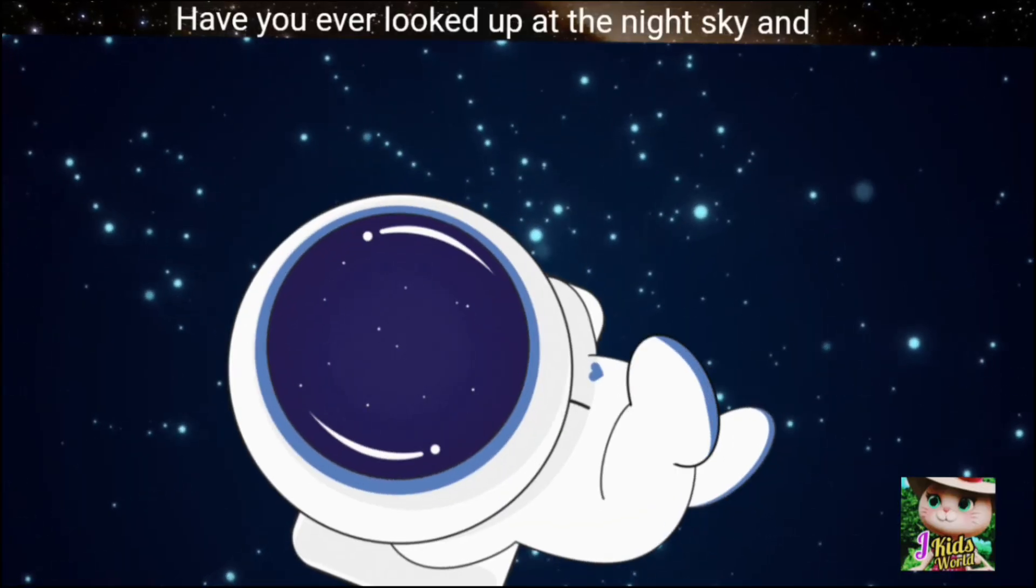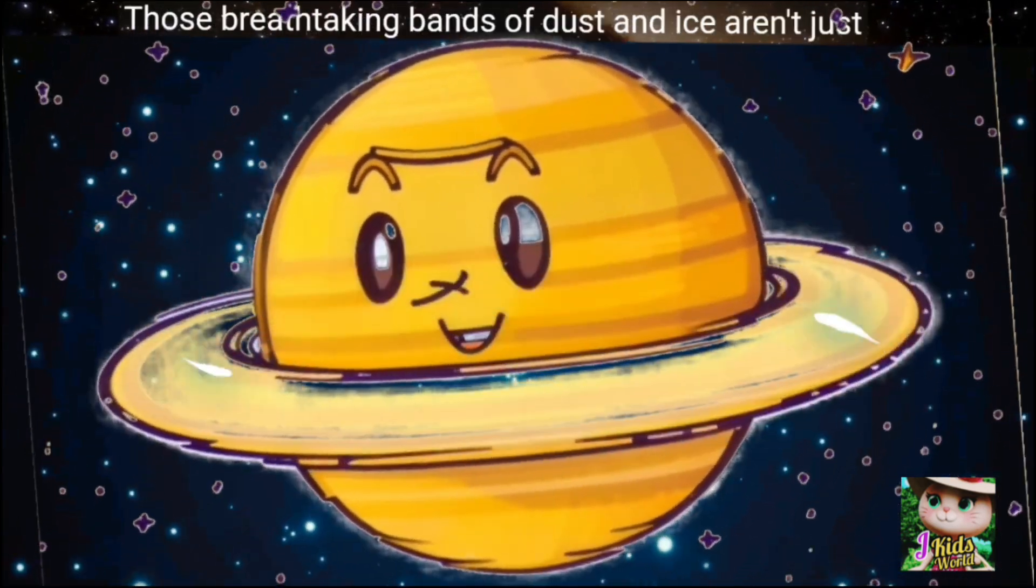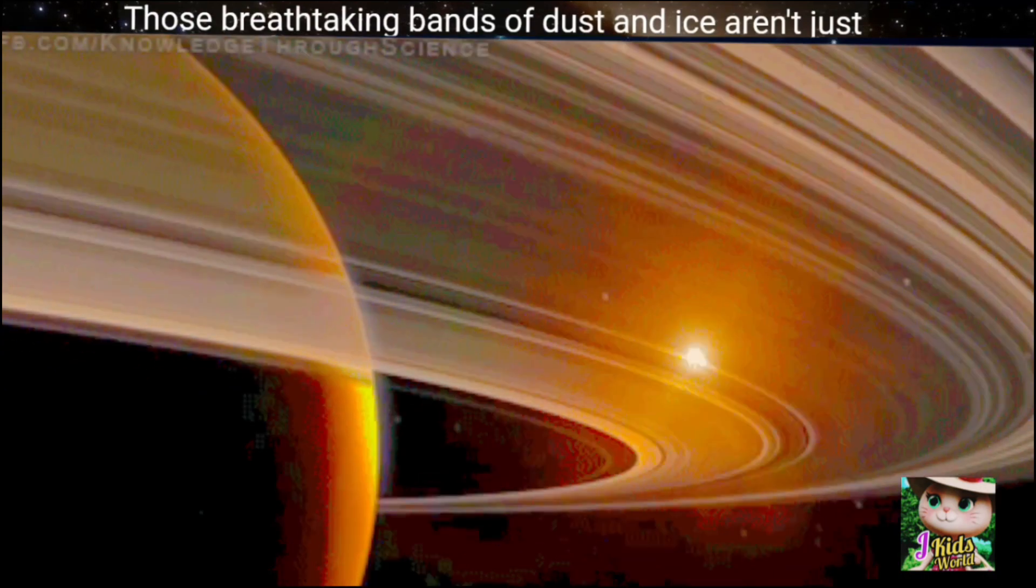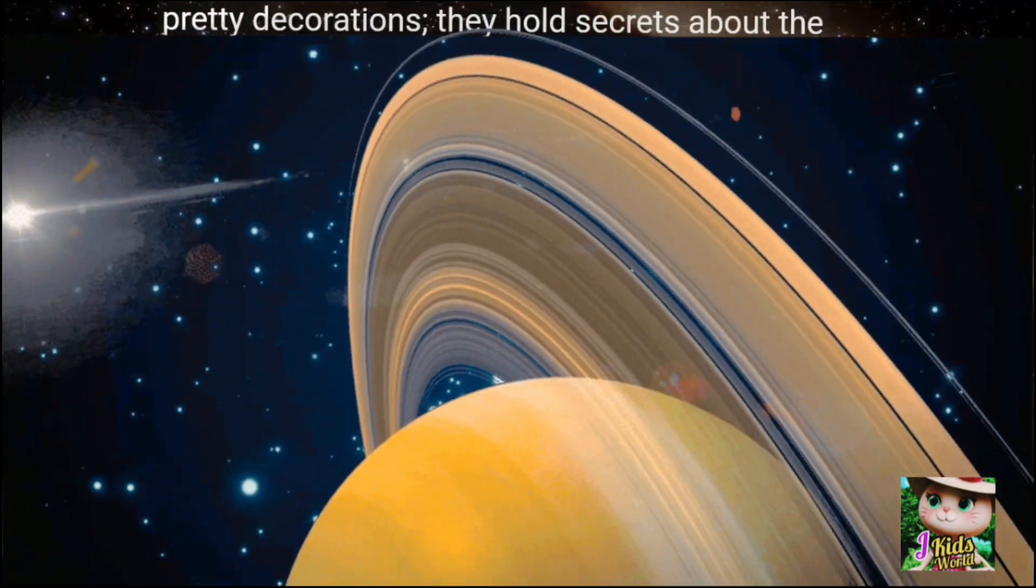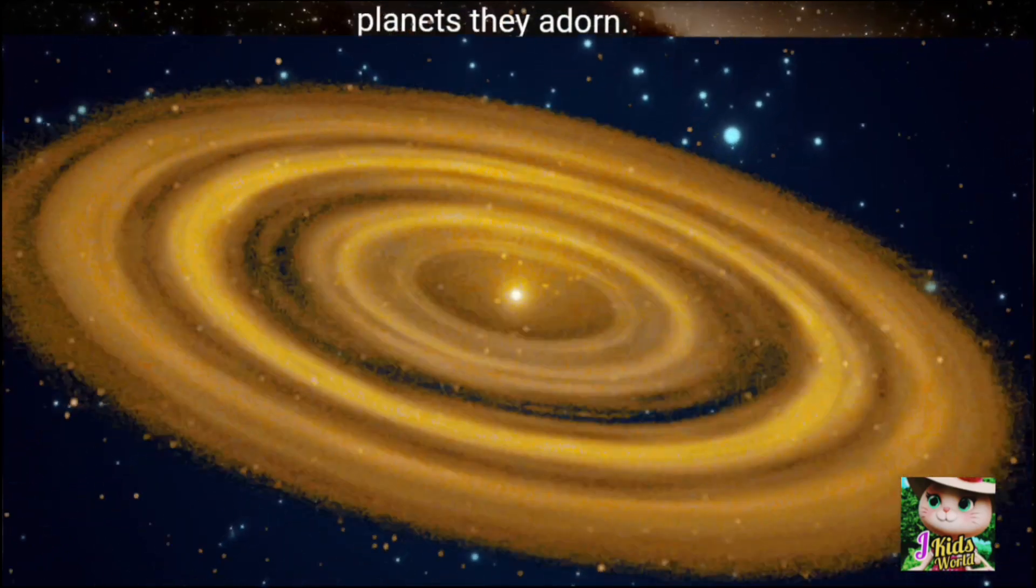Ever looked up at the night sky and marveled at the shimmering rings around Saturn? Those breathtaking bands of dust and ice aren't just pretty decorations. They hold secrets about the formation of our solar system and the stories of the planets they adorn.